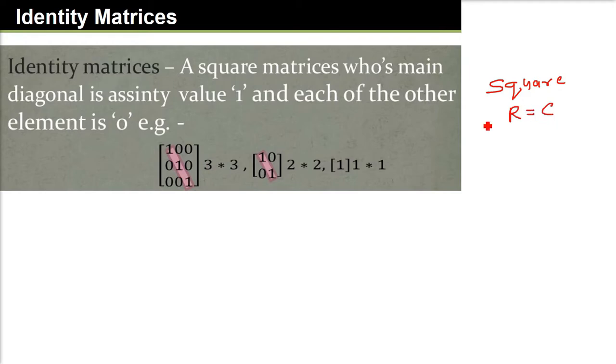So a square matrix whose diagonal matrix is 1, other element 0. The rows and columns have to be equal, then only you will get the diagonal.